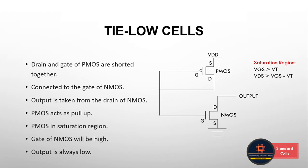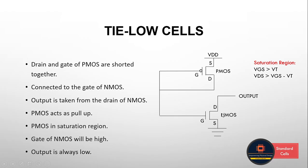Next is the Tie Low Cell, which uses a similar concept. In the Tie Low Cell, we want the output to always be logic zero. For that, the drain and gate terminal of the PMOS transistor are shorted together, and that connection is made to the gate of the NMOS transistor. When gate and drain are shorted, VD = VG, so PMOS is in saturation and acts as a pull-up transistor. This gives the NMOS gate an input of one, which makes NMOS act as a pull-down transistor. Hence, the output is always low — NMOS pulls it down and PMOS acts as pull-up.